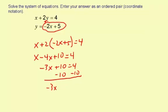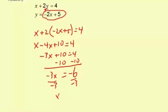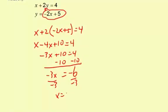Subtract 10 from both sides: 4 minus 10 is negative 6, and then divide by negative 3 to get x by itself. So x equals negative 6 divided by negative 3, which is positive 2.